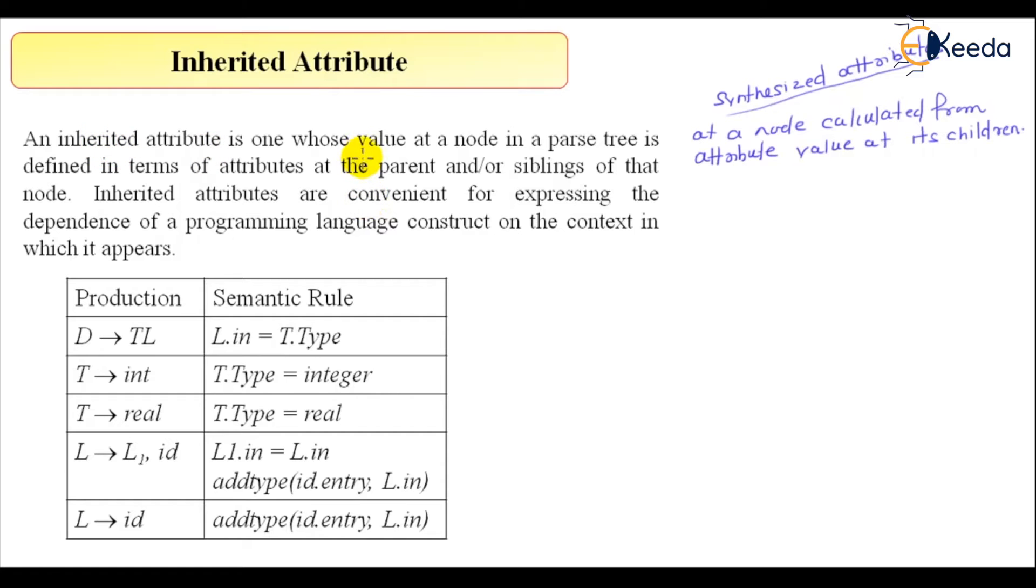Now, coming back to this Inherited Attribute, an Inherited Attribute is one whose value at a node in a parse tree is defined in terms of attribute value at parent or sibling of the node. Now from the children and the statement is clearly saying something very different, that Inherited Attribute either from where it will take the value, it will take from parent or it will take the value from siblings, so that value it is calling it as an Inherited Attribute.